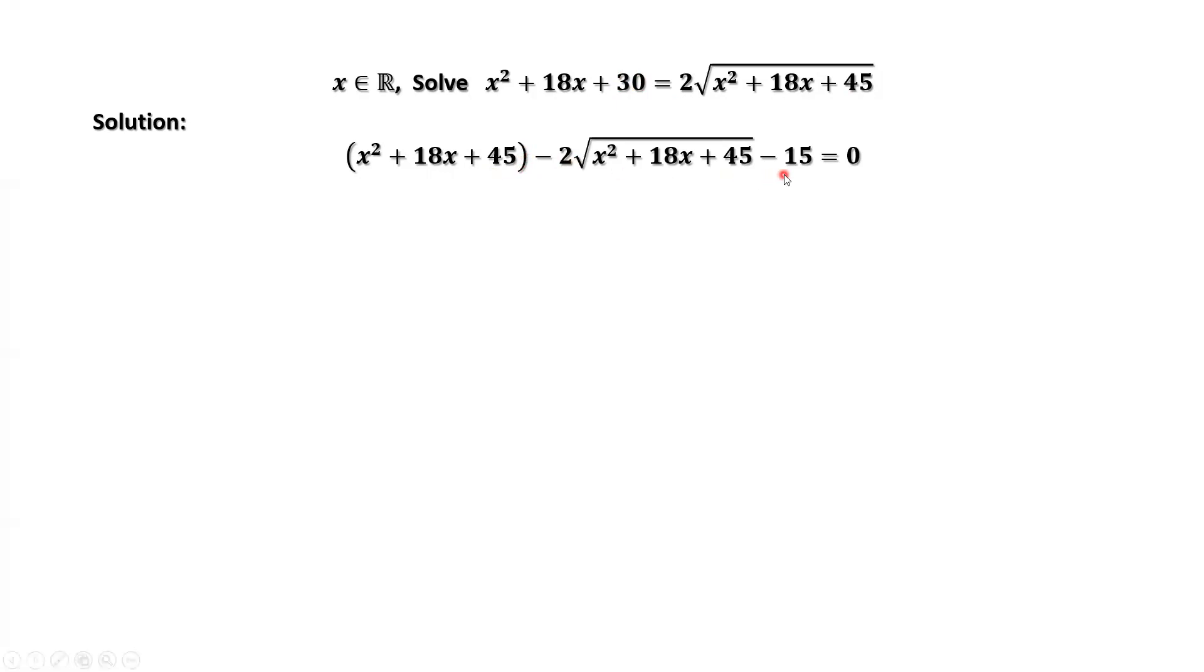Here, we have to minus 15 to keep the equal sign. Now you can see the inside part of the square root and the first part are the same.